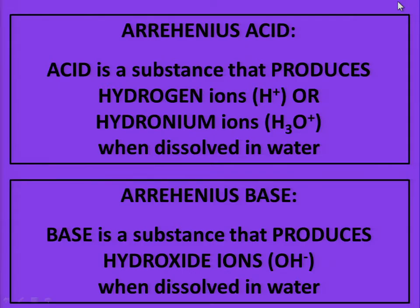Arrhenius Acid: a substance that produces hydrogen ions or hydronium ions when dissolved in water. Arrhenius Base: a substance that produces hydroxide ions when dissolved in water.